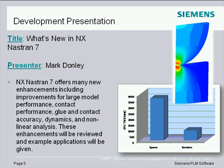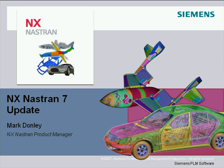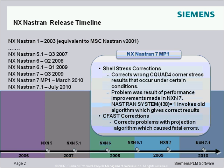Let me introduce Mark Donnelly. He's going to be covering what's new in NX7, and luckily for us, NX7's already out, so all of this is pertinent. What I'm talking about today is the NX NASTRAN 7 release. NASTRAN 7 was released in the third quarter last year, maybe more at the beginning of the fourth quarter, and what I'll be talking about this afternoon are enhancements we made in that release.